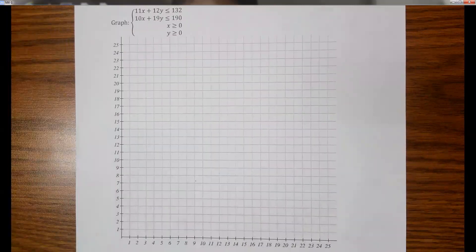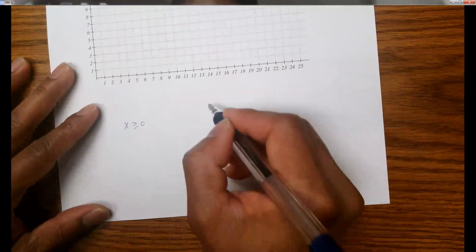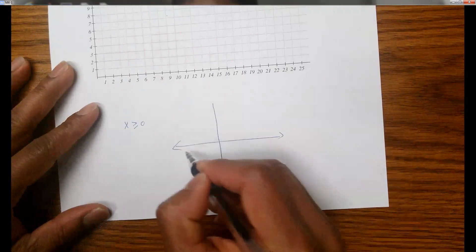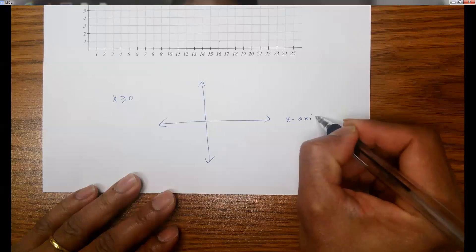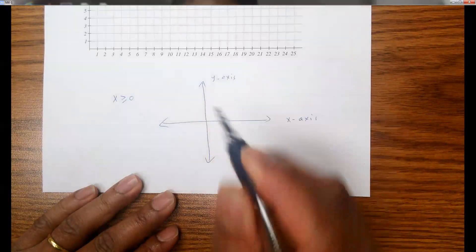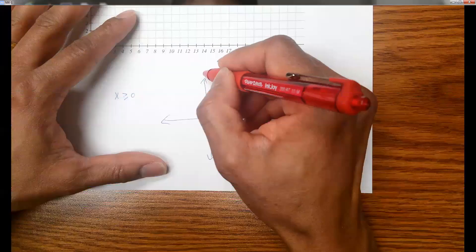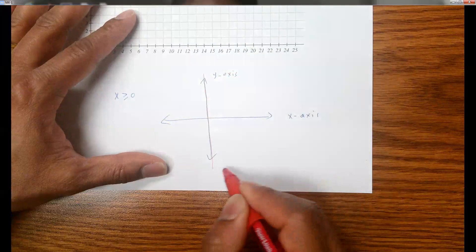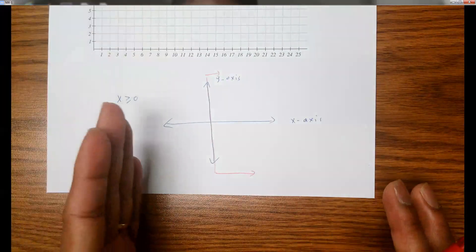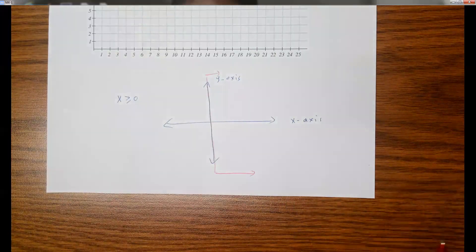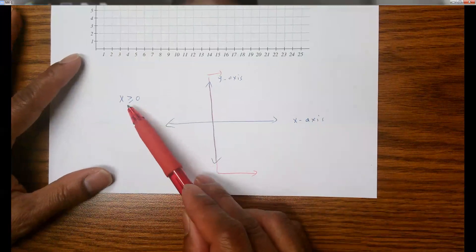First of all, let's try to understand the meaning of x is greater or equal to 0 in the coordinate system. So this is the coordinate system — this is the x-axis and this is the y-axis. So x is greater or equal to 0 means from the y-axis to the right side. If you go to the right side, including the y-axis, the value of x is always greater than 0 or equal to 0.